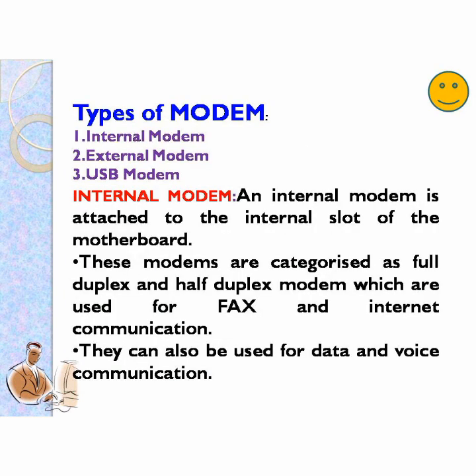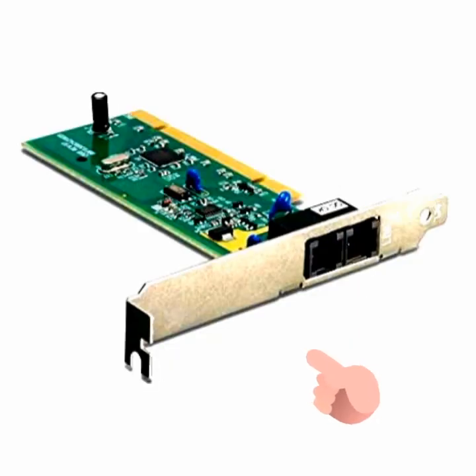Now we'll discuss different types of modem: number 1, internal modem; number 2, external modem; number 3, USB modem. An internal modem is attached to the internal slot of the motherboard. These modems are categorized as full duplex and half duplex modems, which are used for fax and internet communication. They can also be used for data and voice communication. This is a picture of an internal modem.